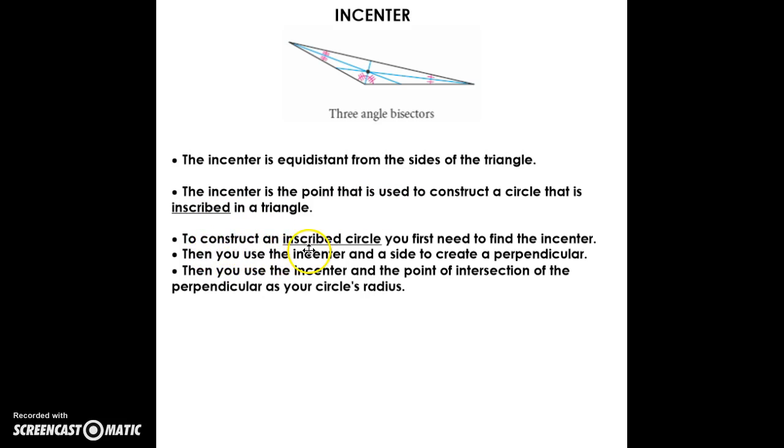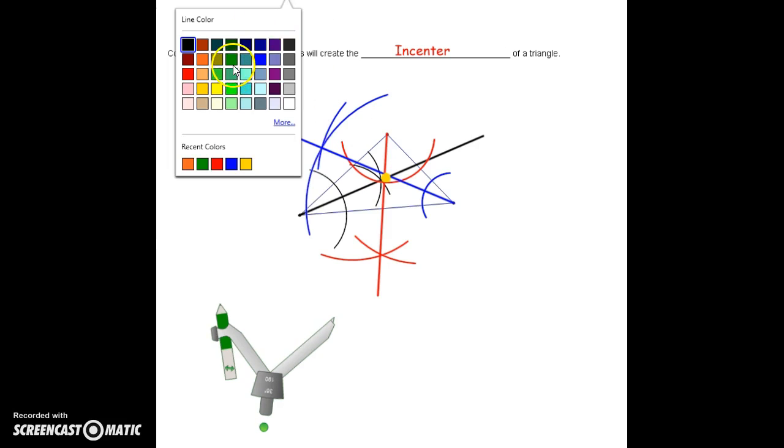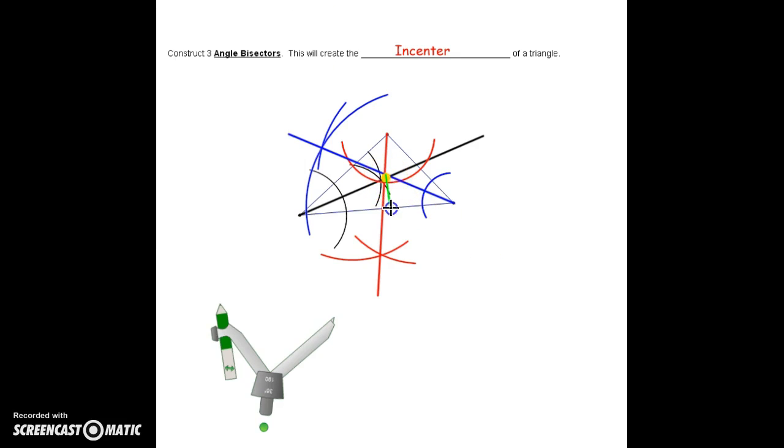To create the inscribed circle, we would need to find the incenter, but then you have to create a perpendicular to one of the sides. Then you would use the incenter and that intersection of the perpendicular and the side to create your radius. I can give you a quick demonstration here. I don't have time to do the perpendicular, but let's just imagine that we had the perpendicular ready to go. I'm just going to eyeball it. Let's say that this was the perpendicular segment from our point down to the side. I would take my compass and measure that radius length from the incenter out to that point.